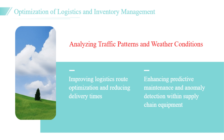Moreover, machine learning can enhance predictive maintenance and anomaly detection within supply chain equipment. By analyzing historical performance data, companies can forecast potential equipment failures and take preventive measures. An automotive manufacturer implemented machine learning algorithms to monitor machinery performance, which allowed for timely maintenance scheduling and reduced downtime. This proactive approach not only minimizes disruptions but also contributes to overall operational efficiency, ensuring that production schedules remain intact.